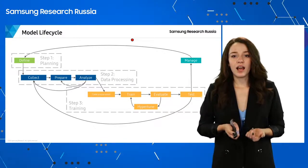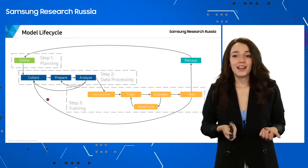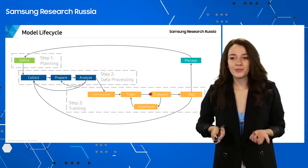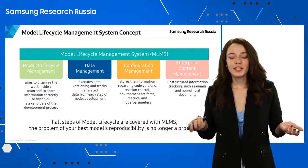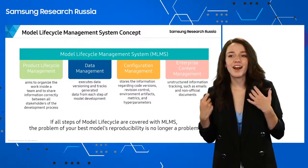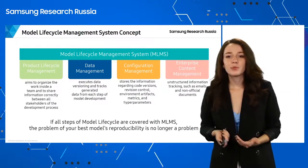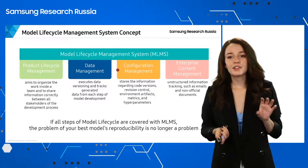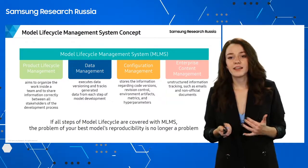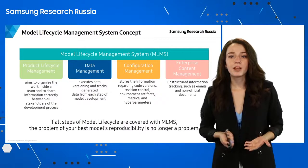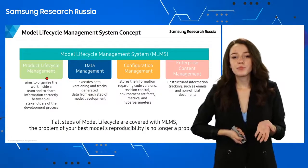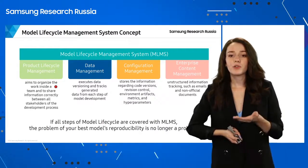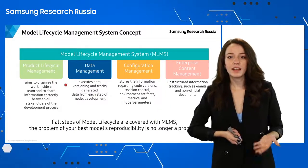As you can see, there are a lot of things to track here — a lot of cycles, a lot of steps done one after another. We need to manage it somehow. We decided to find how to manage it. There is a concept called the Model Lifecycle Management System. It means we should cover every stage of our process with some kind of module that can support us and track everything we need. First of all, we need a product lifecycle management module to help organize team members, tasks, roles, and responsibilities.